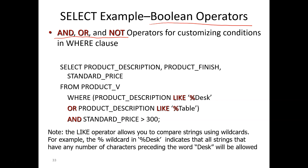For example, select the product description, product finish, standard price from the product view where we see a parenthesis. In mathematical operations you always process what's in the parenthesis before what's outside. As you can see, it says product description LIKE '%desk' — meaning the description needs to include the word 'desk' — OR product description LIKE '%table'. We're using the OR operator here to include all desks and all tables.